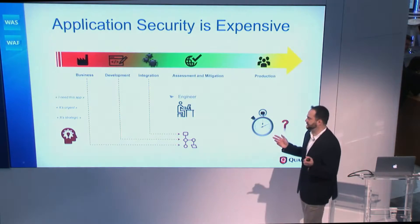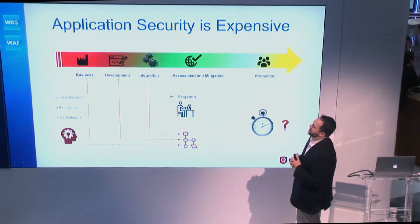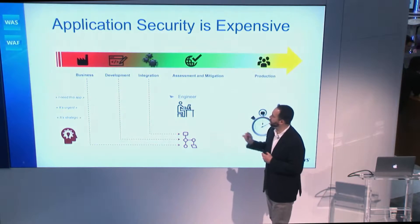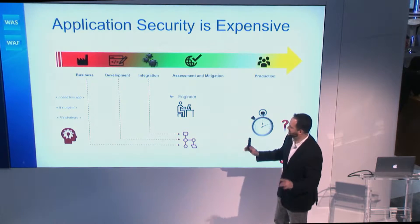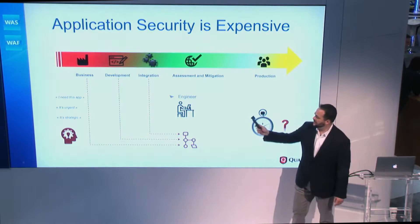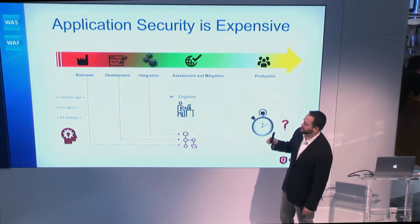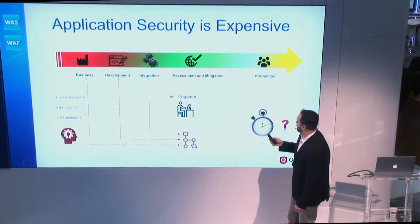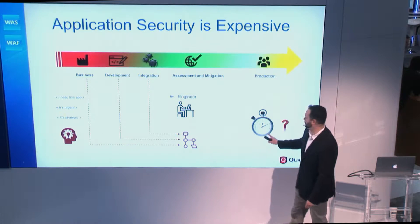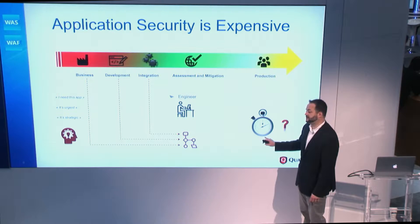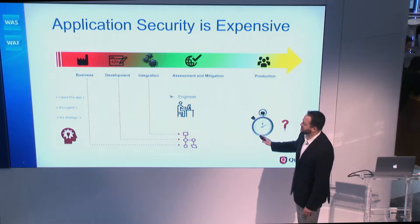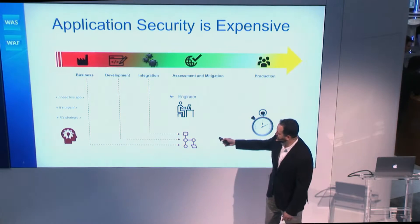Application security is also pretty expensive. It has a business need — you go from the business need to development. It integrates with all your back-end and front-end systems, with engineers involved at every step. We need to make sure we're building in assessments and mitigations at every level, so that your web application security becomes part of your secure development procedures and processes. When it gets to production, you want to make sure you've addressed as many things as possible before it gets there, because even in production you'll have many opportunities for dynamic content and vulnerabilities that may not have been picked up earlier in the cycle.